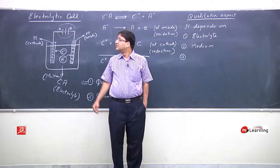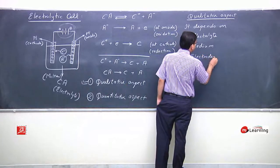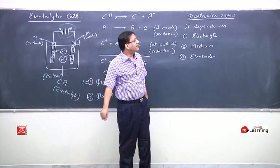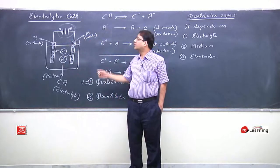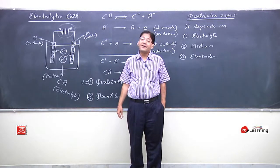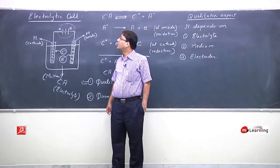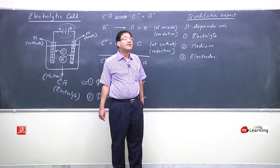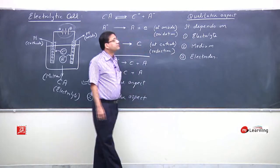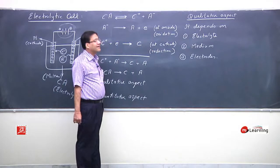The third factor governing the reaction in the electrolytic cell is the type of electrode used. When we use a platinum electrode, it plays no role since it is inert. But if we use a graphite electrode, copper electrode, or silver electrode, these different metals will affect the reaction taking place in the electrolytic cell in different ways. These are the three factors which govern the chemical reaction in any electrolytic cell.